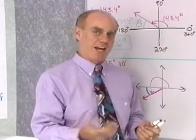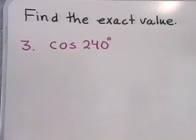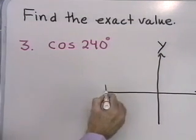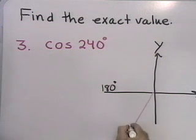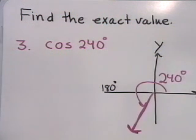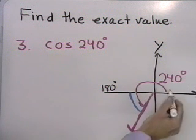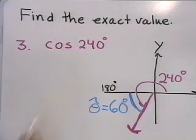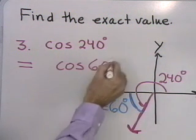Now let's find the trigonometric function of an angle using the reference angle. Problem three: find the cosine of 240 degrees — an exact value. Drawing a picture: 240 degrees is between 180 and 270 degrees, so it terminates in quadrant three. The reference angle is 240 minus 180 degrees, which is 60 degrees. So the cosine of 240 will equal the numerical value of the cosine of 60 degrees, with the only difference being the algebraic sign.